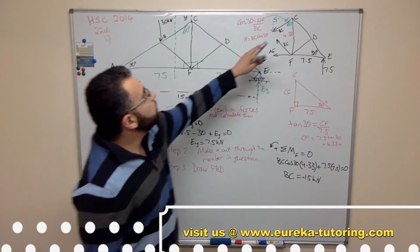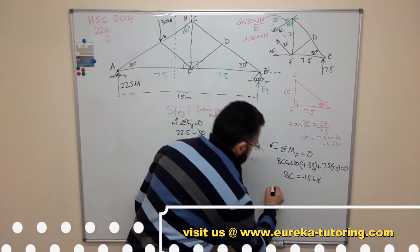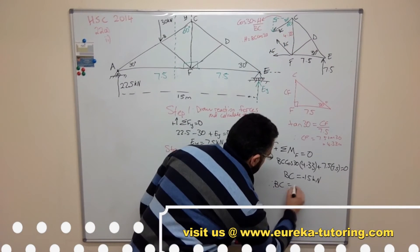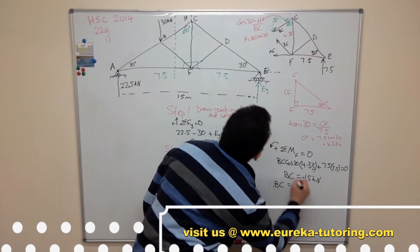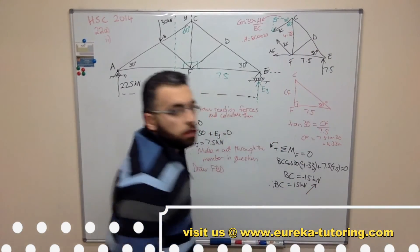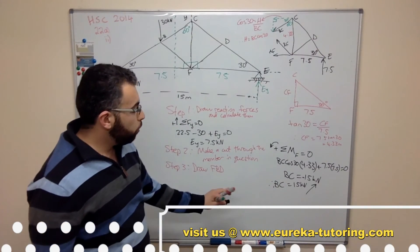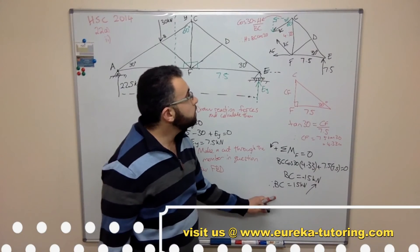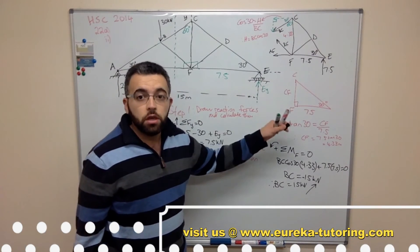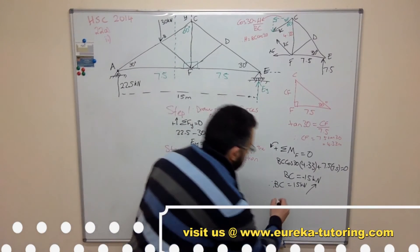Now when you see a negative value, that means the direction that you assumed was incorrect. So what we do is we go back to our free body diagram and flip this direction. So BC therefore equals 15 kilonewtons. Instead of going that way, it's now going this way. Now the nature of this force is compression. Why? If the force is directed towards the joint we call that compression. If it is directed away from the joint it is tension. So therefore this is compression.